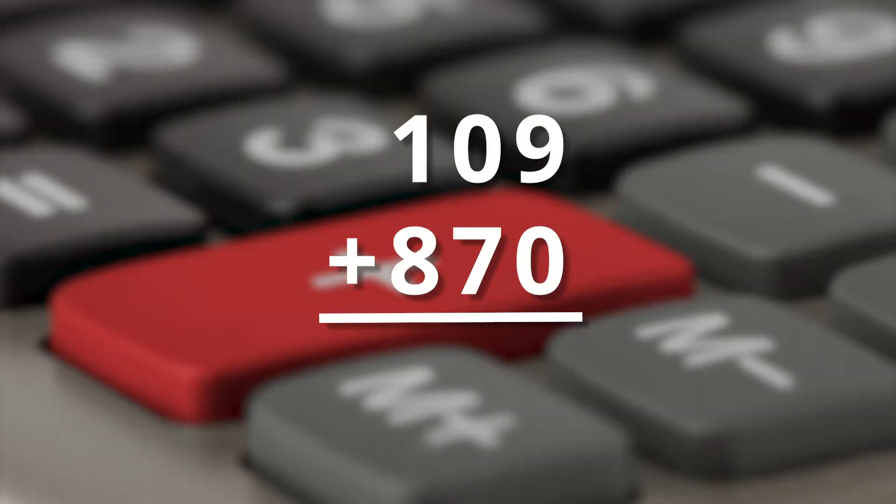Okay, here's a little bit of a tougher one. A hundred and nine plus eight hundred and seventy. So, you have the nine plus zero, which gives you nine. Zero plus seven, which gives you seven, and one plus eight, which gives you nine. Nine hundred seventy-nine. Well done!